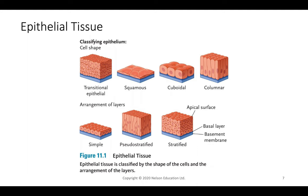Cell shapes include: transitional — where bottom cells regenerate and top cells take a different shape; squamous — flat, wide cells like farmland rather than a city; cuboidal — shaped like little cubes; and columnar — shaped like columns. Layers can be simple (one layer), stratified (multiple layers growing on top of each other), or pseudostratified, which only applies to columnar cells.